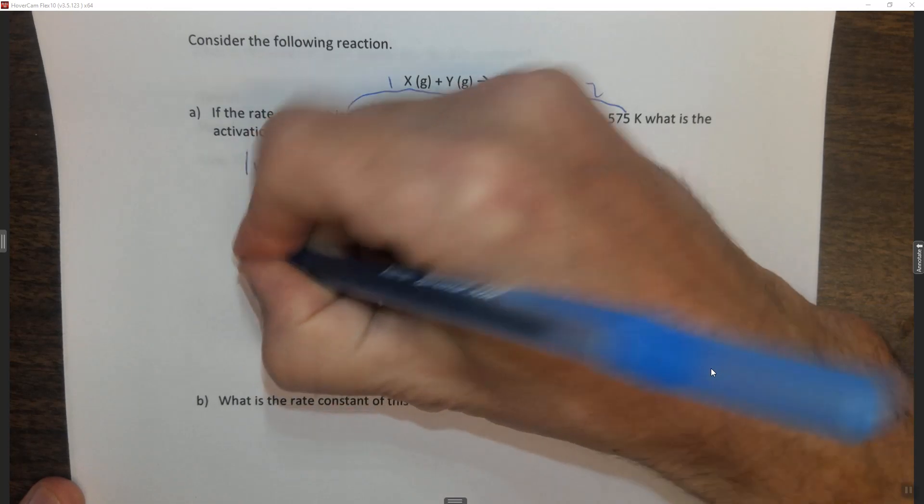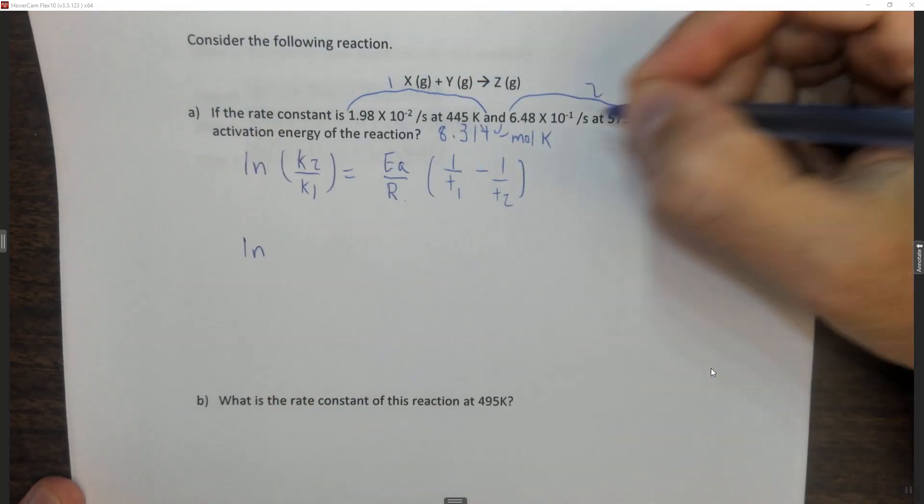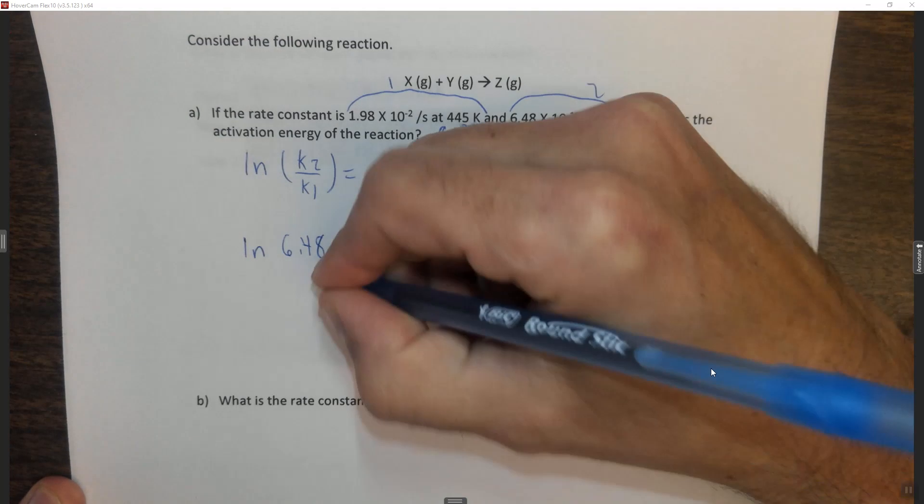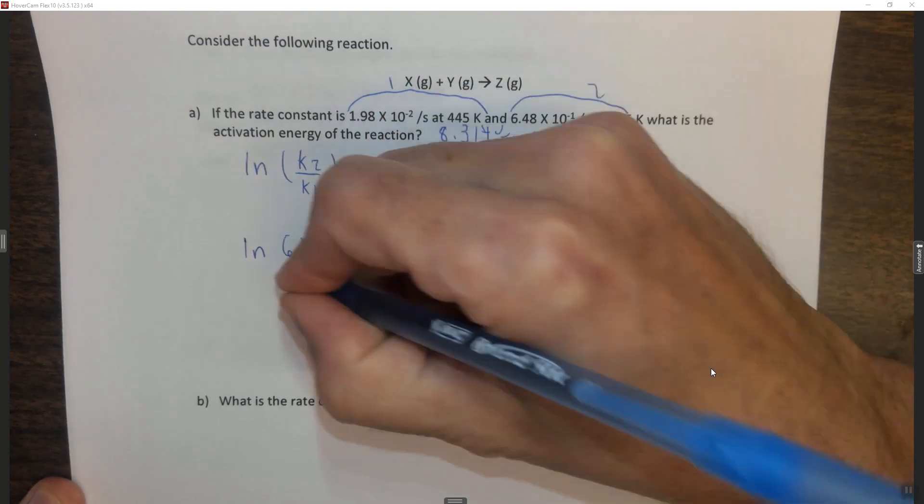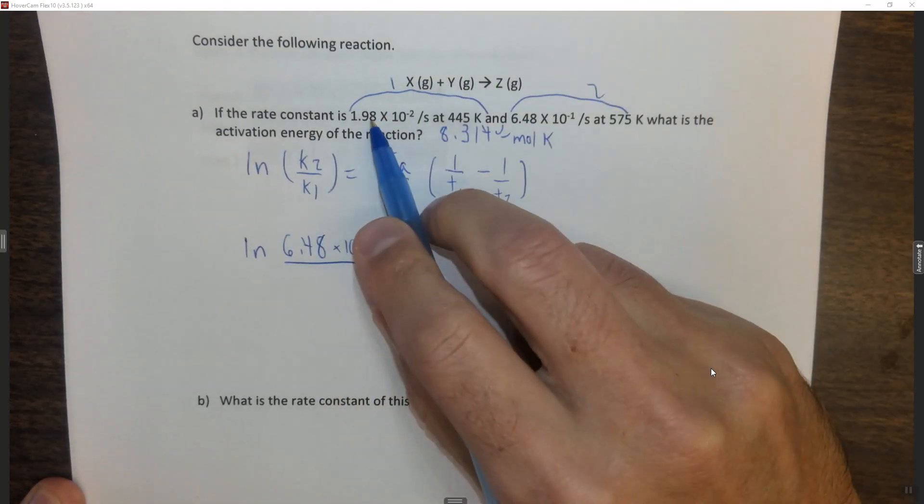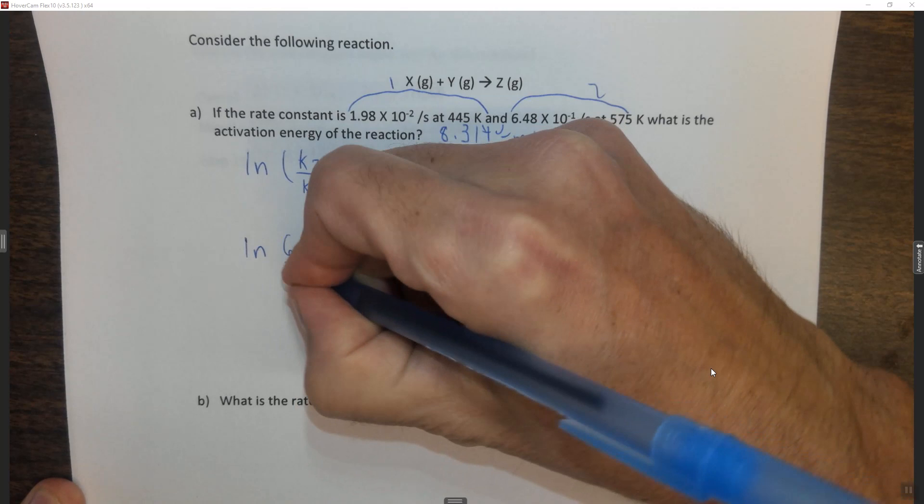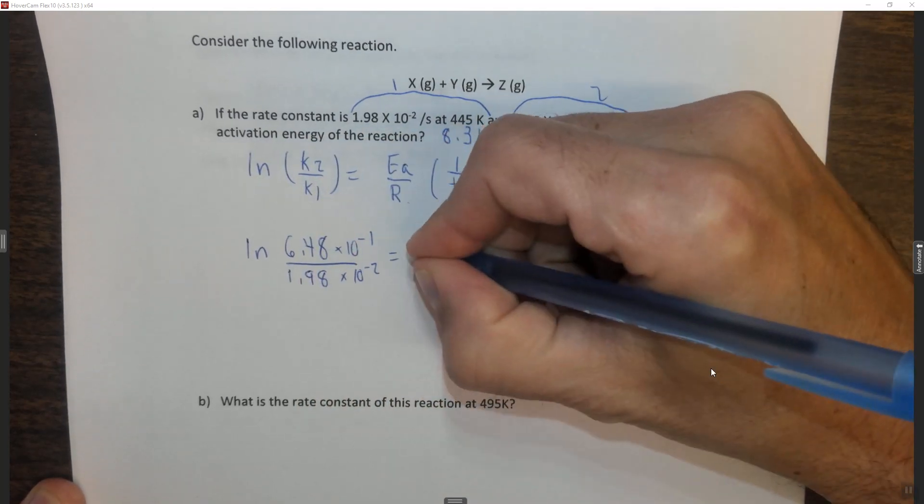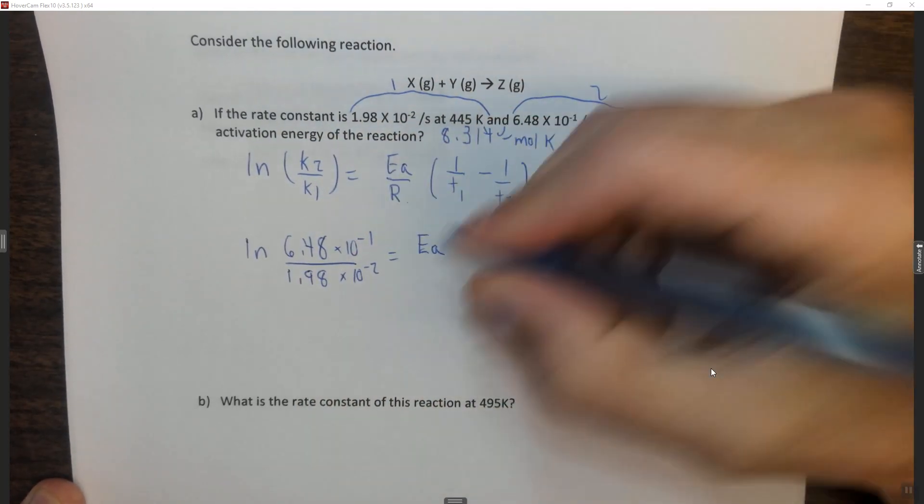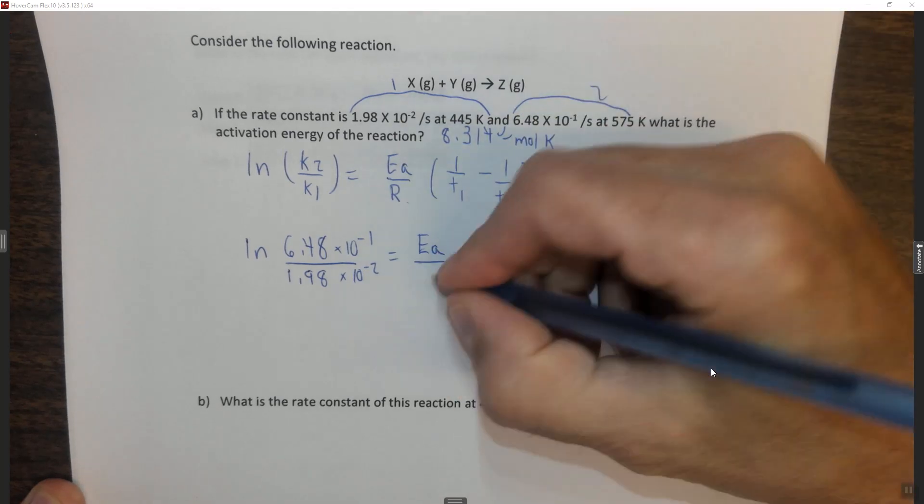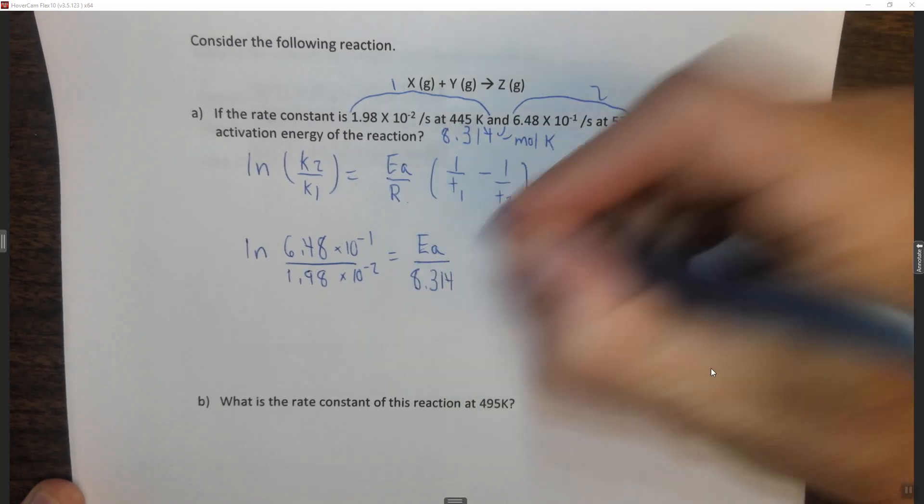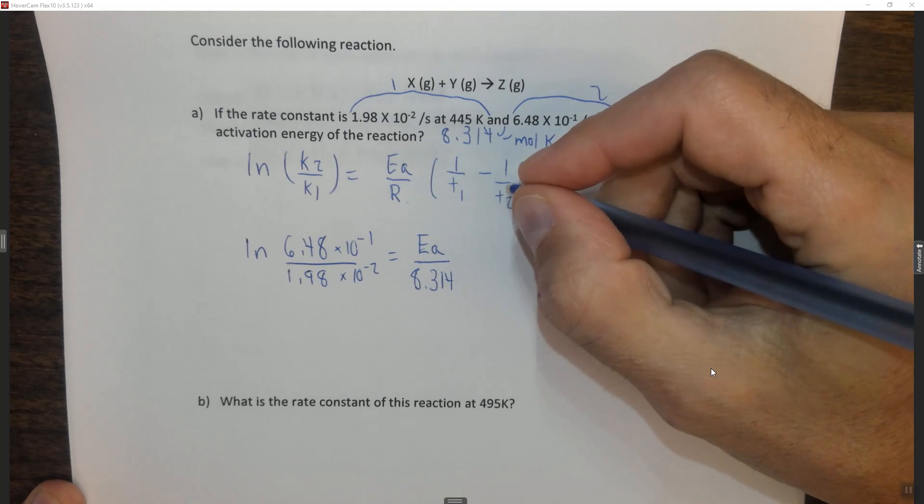The ln of k2, so we decided this was the two, is 6.48 times 10 to the minus 1 over k1, which is 1.98 times 10 to the minus 2, equals Ea, that's your variable, over R which is 8.314, and that's joules per mole K.